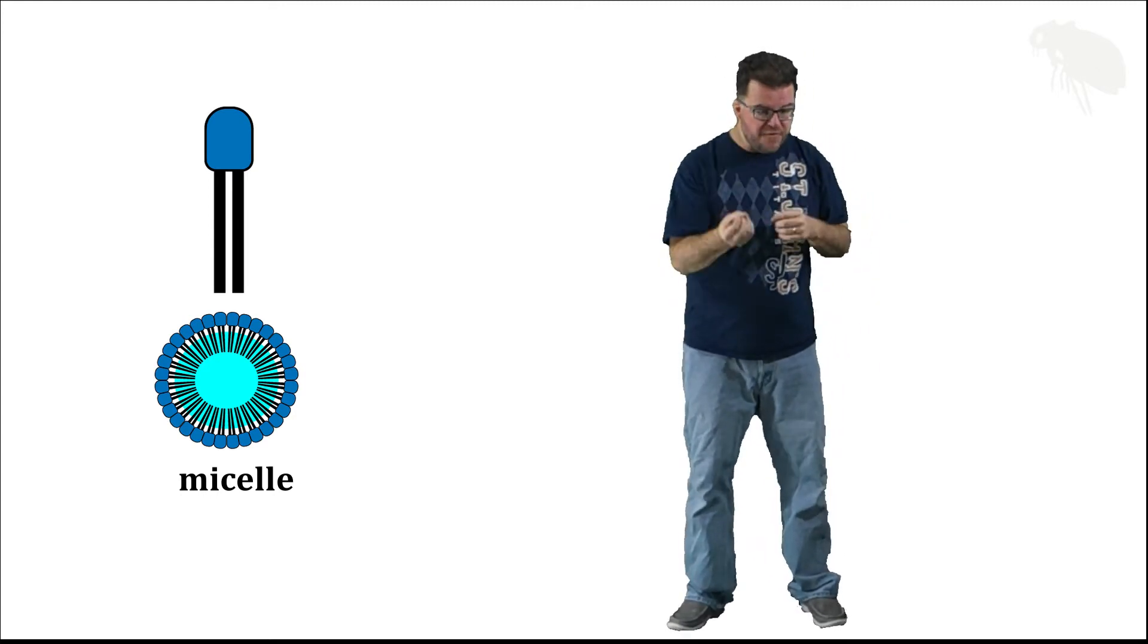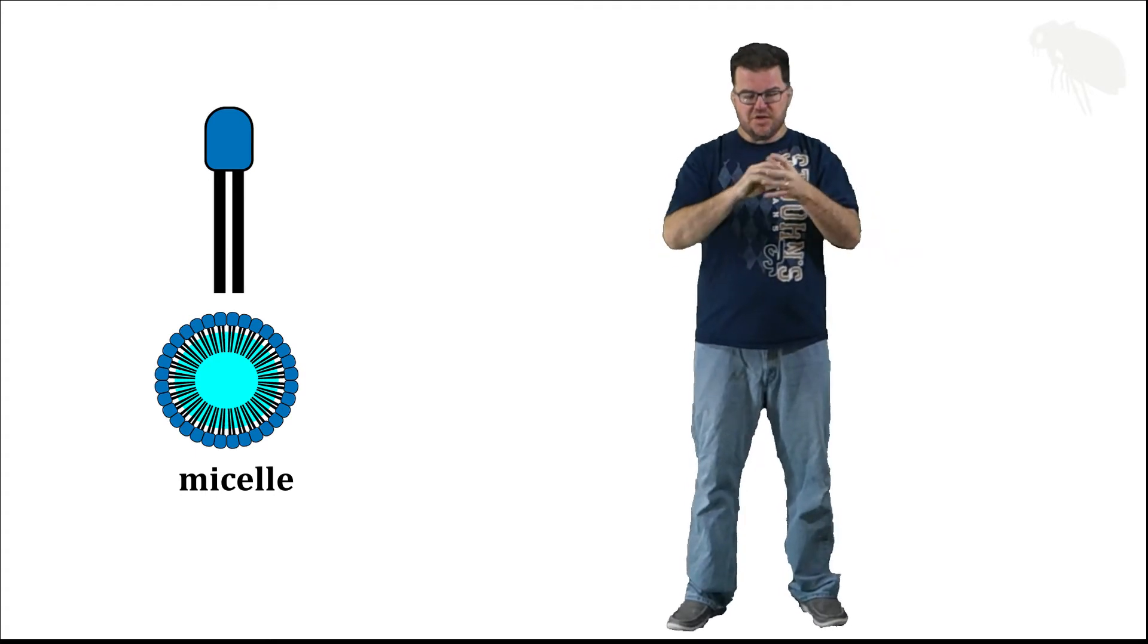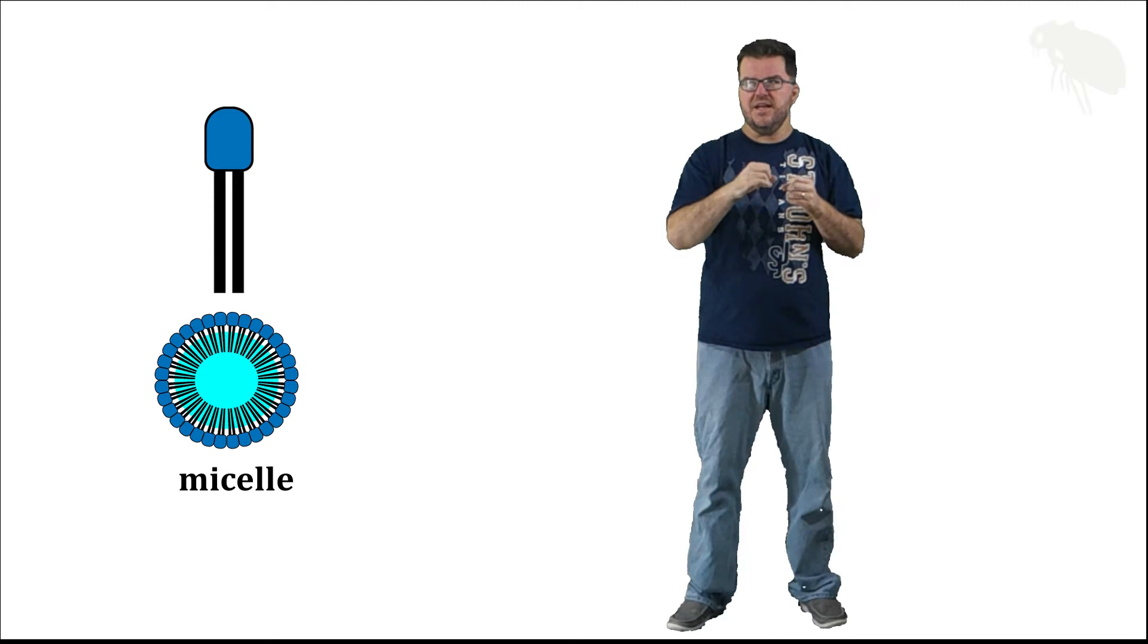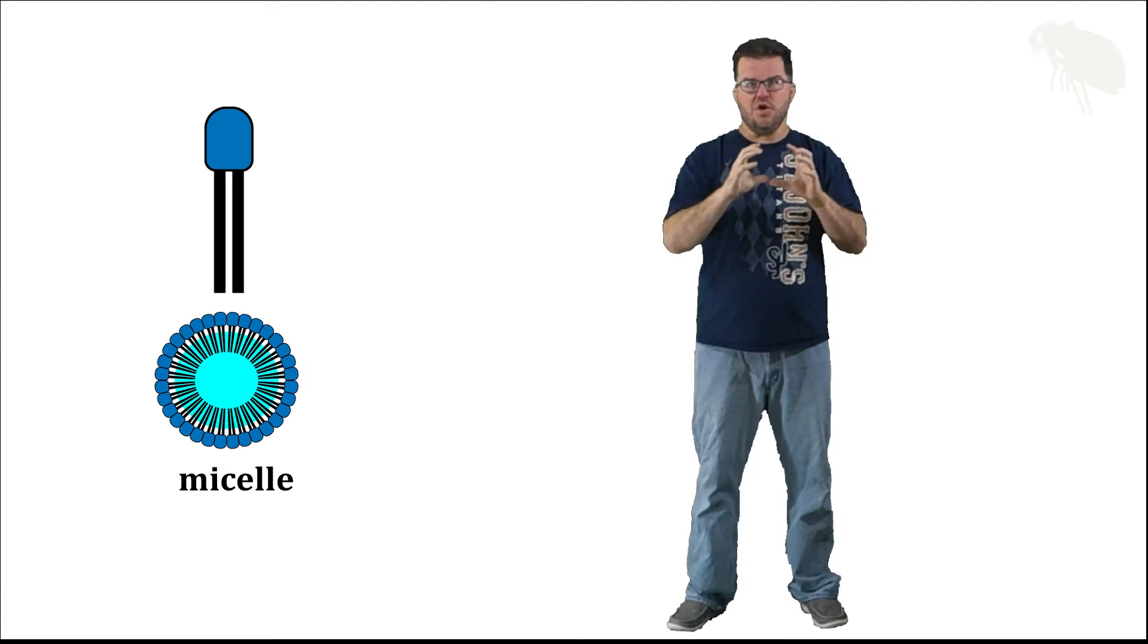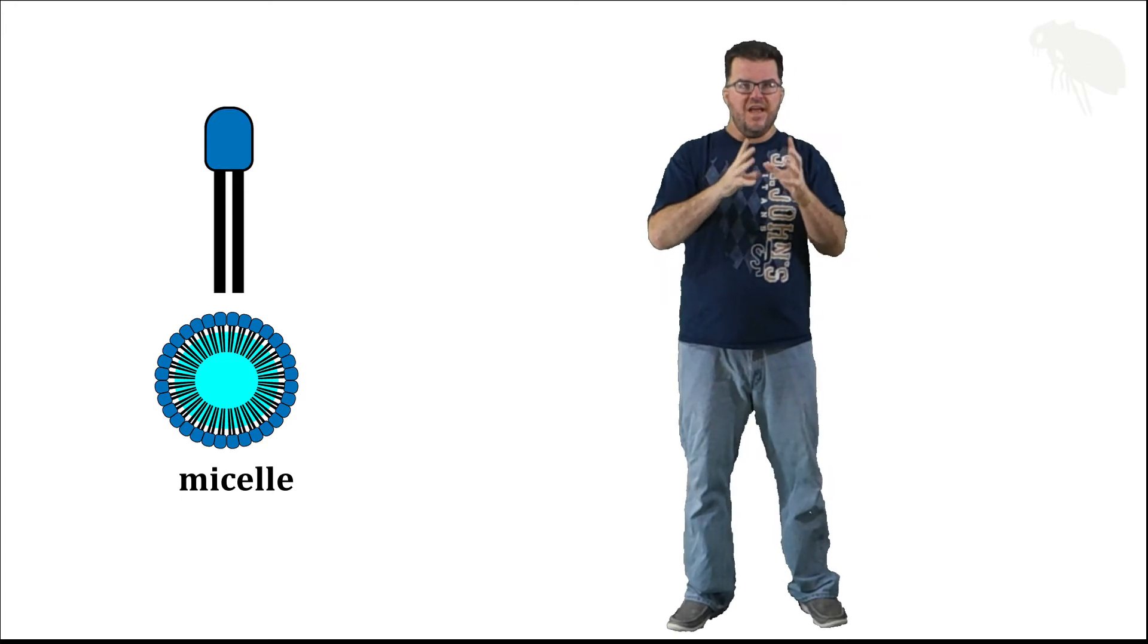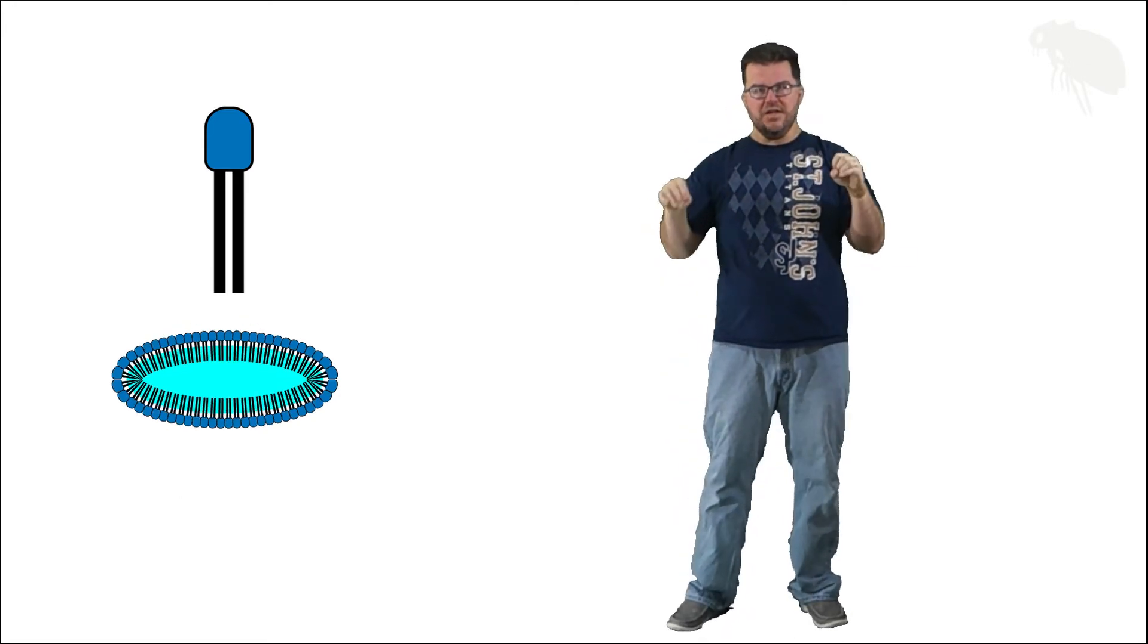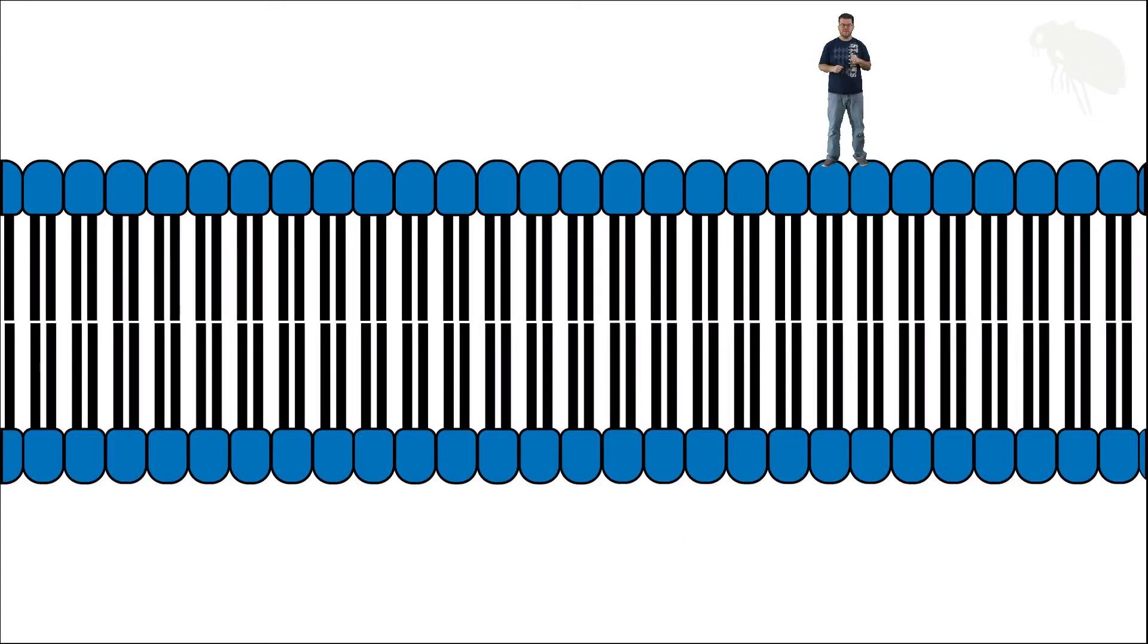But if you put enough of them in there, they begin to interact with each other in a way where the weak and transient hydrogen bonds that individually aren't that strong start to overwhelm things if you get enough of them. And instead of being held together as a ball, it starts to flatten out and we get a membrane. It's our phospholipid bilayer, the basic structure of the plasma membrane.